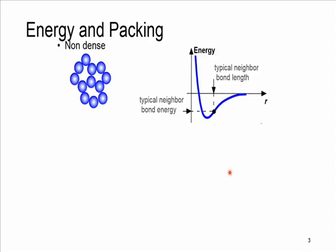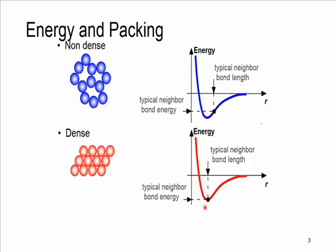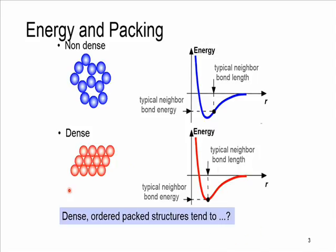In the previous chapter, Chapter 2, we discussed how the distance between atoms and different types of bonding result in different values of bond energy. Now we compare packing effect at the energy level. With non-dense atoms sitting in irregular order, bond energy is not at its minimum level, so the system is not stable. While in dense and ordered packing, the system is at its minimum level of bond energy, so it is stable. Therefore, dense ordered packing structures tend to have lower energy.